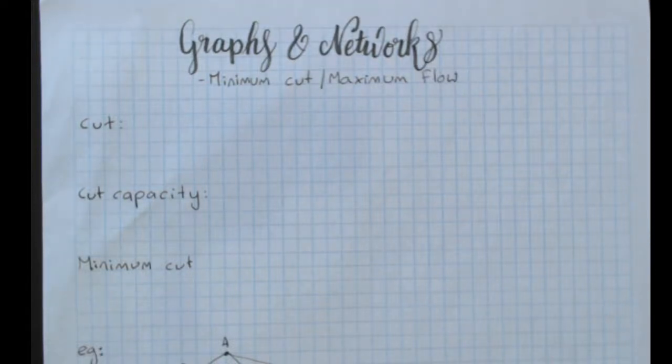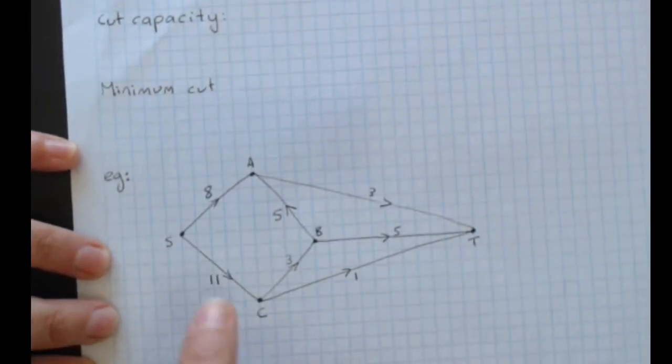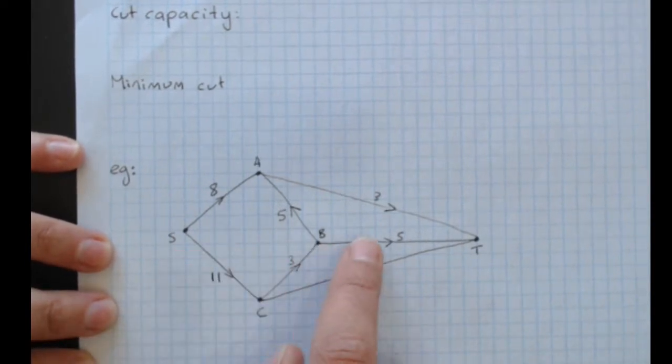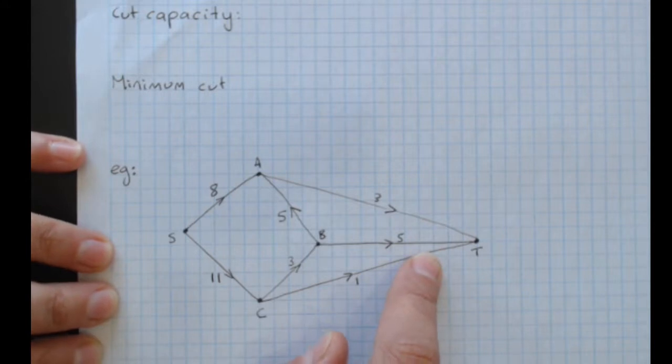Graphs and networks, flow problems, minimum cut and maximum flow. Connector problems in graphs and networks look at the maximum amount in a weighted directed graph that can flow through. In this example, I've got a source where everything's coming from and a sink where everything's going to.